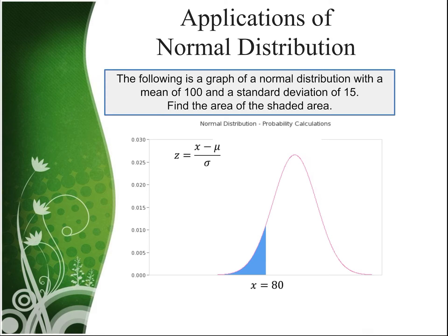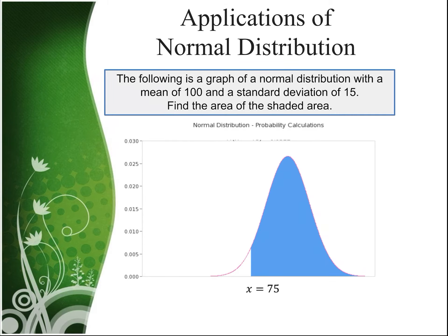And sure enough, when we use our formula, 80 minus 100 is negative 20 divided by 15. Our standard deviation gives us a z-score of negative 1.33. Now that we've found our z-score, we can go back to our standard normal distribution table and find the corresponding area.